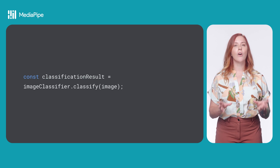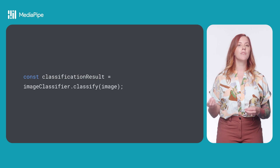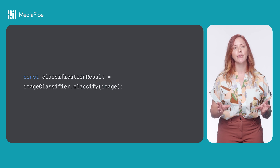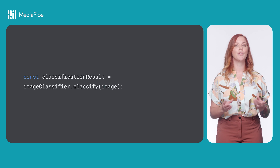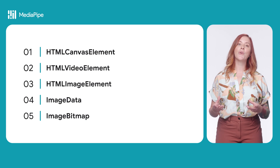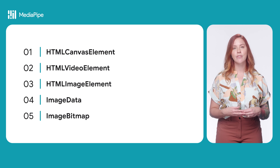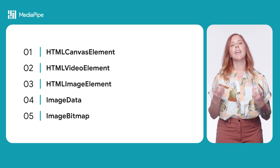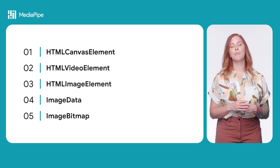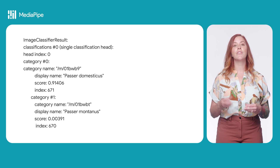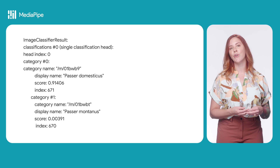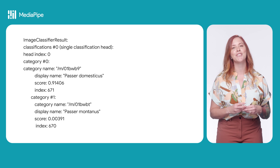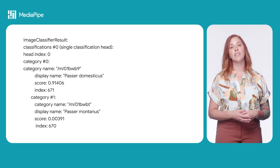To run classification on an image, use the ImageClassifier classify method, passing the image source. This function is synchronous, which is good to keep in mind when designing your UI. The source can be an HTMLCanvas element, HTMLVideoElement, HTMLImageElement, ImageData, or ImageBitmap. This function returns an image classification result object. There are a series of classifications in order of how confident the model is that the image belongs to the given category.